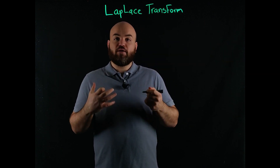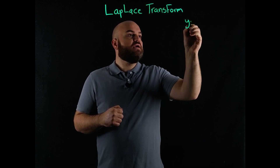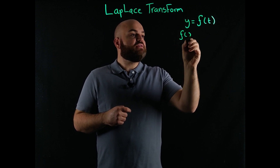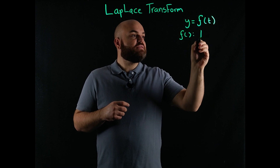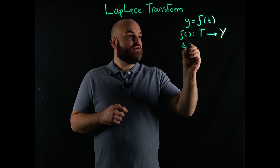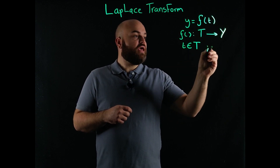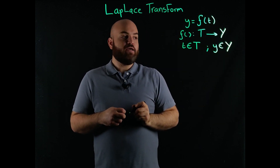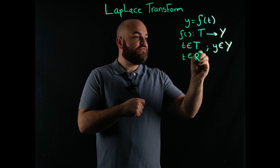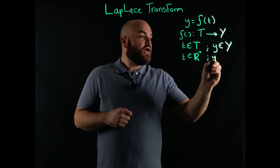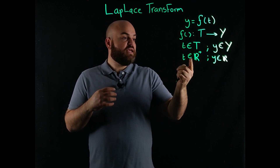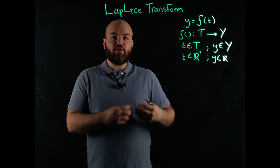let me start out by talking about functions. So when we say we have a function — say y is some function f of t — what does that mean? That typically means that f is some mapping that takes samples in a set T, and transforms them to samples in the set Y, where T belongs to the capital T set and Y belongs to the capital Y set. So this function takes a variable t in the positive real numbers, and it generates a Y in the real numbers set.